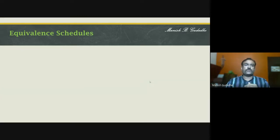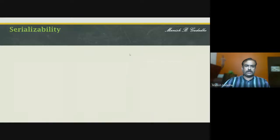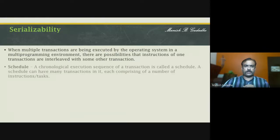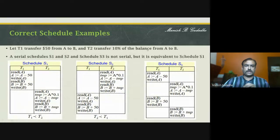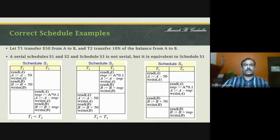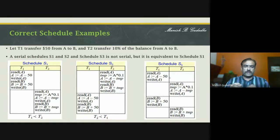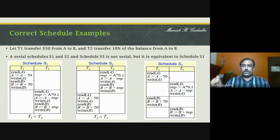In the previous lecture, schedules S1, S2, and S3 are trying to arrange T1 and T2 such that it will create a serial schedule — meaning T1 will be executed first and then T2, or T2 and then T1. We can also have schedule S3, which is a blend of executing parts of instructions of T1 and T2, which is not serial.